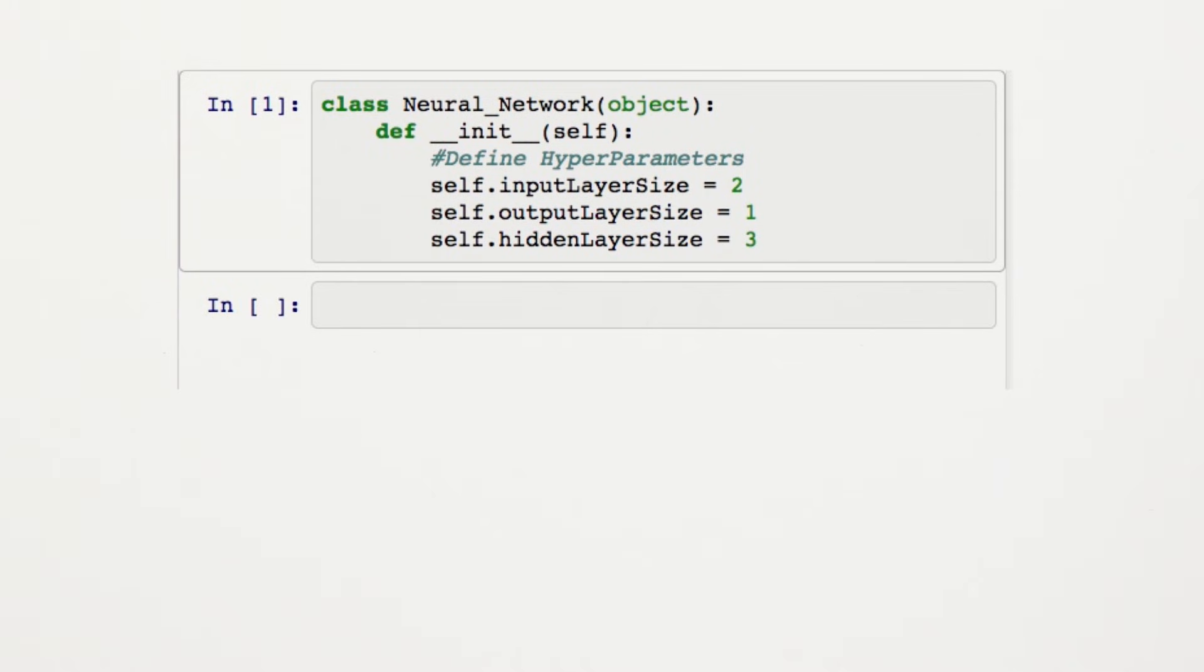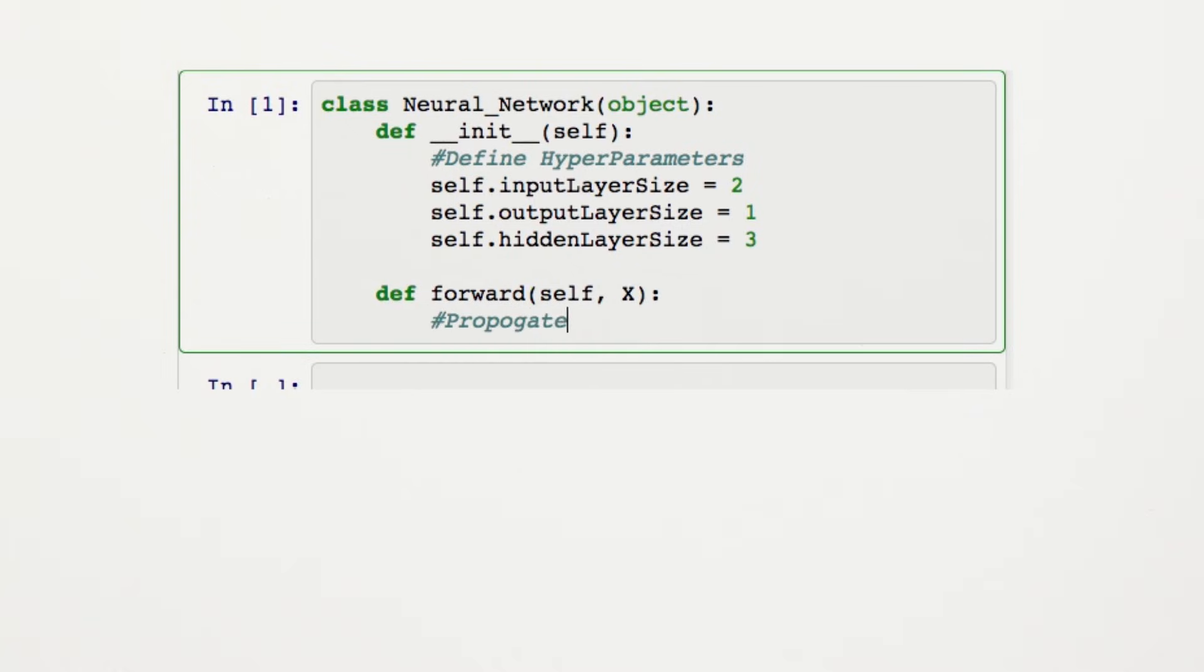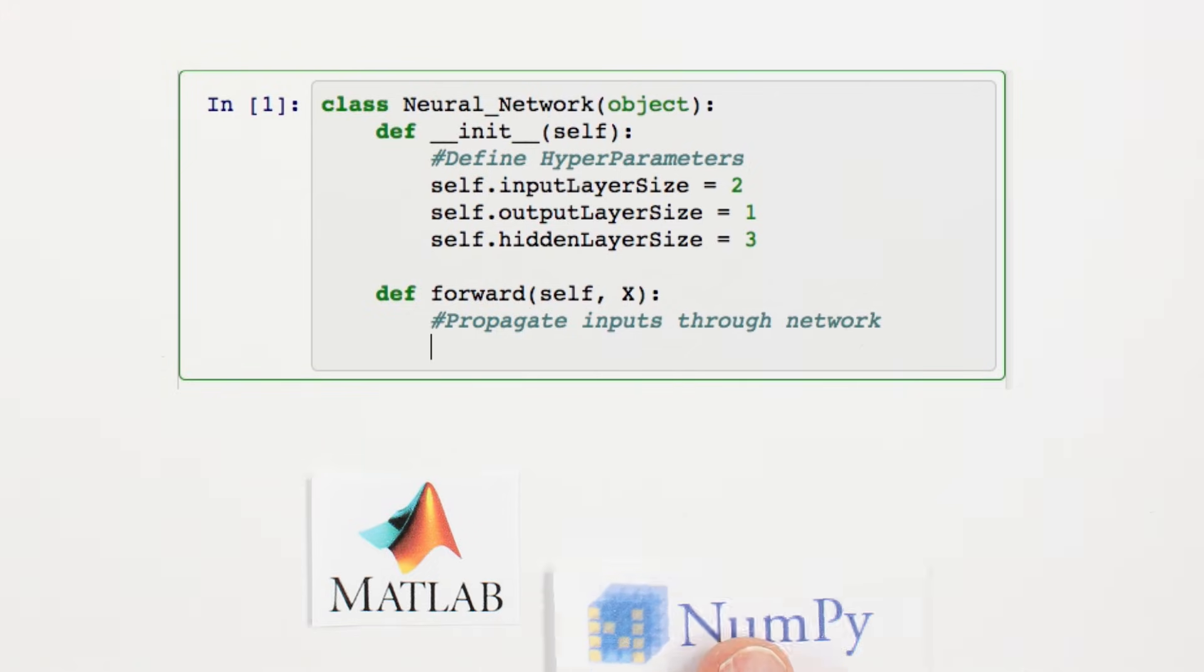We'll take care of moving our data through our network in a method called forward. Rather than pass inputs through the network one at a time, we're going to use matrices to pass through multiple inputs at once. Doing this allows for big computational speedups, especially when using tools like MATLAB or NumPy.